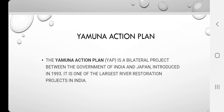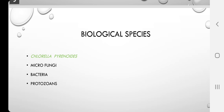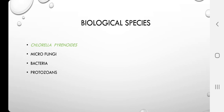The Yamuna Action Plan is a bilateral project between the Government of India and Japan, introduced in 1993, and is one of the largest river restoration projects in India. This information pertains to the biological stage where microorganisms help us get rid of the harmful effects of sewage water, which when mixed with natural water bodies causes many complications for human society.